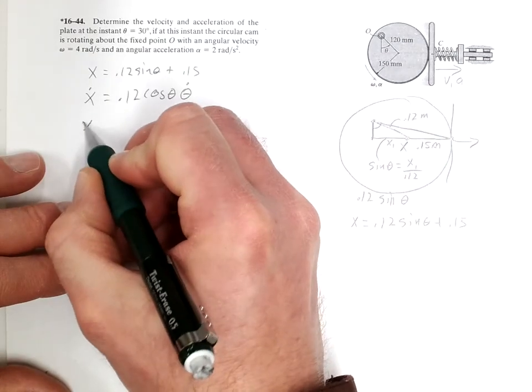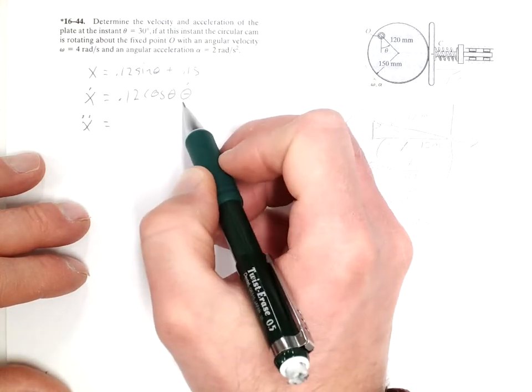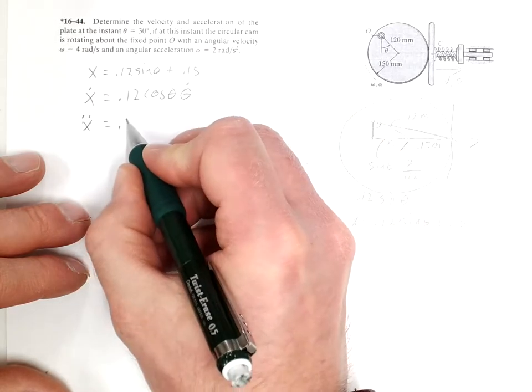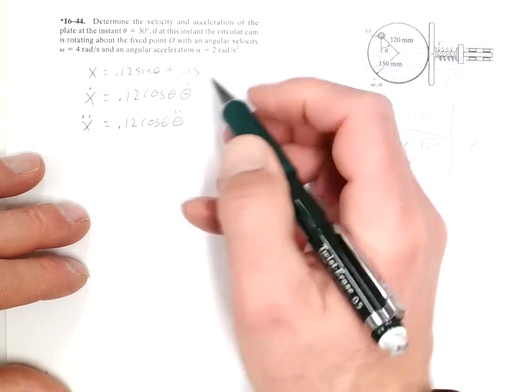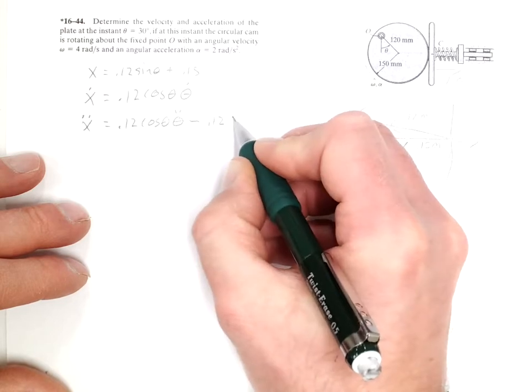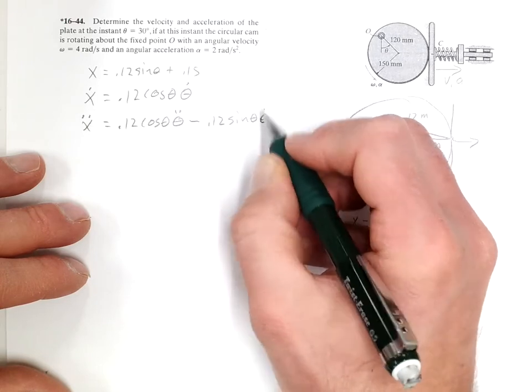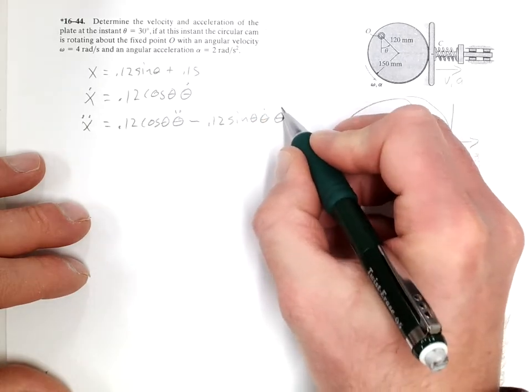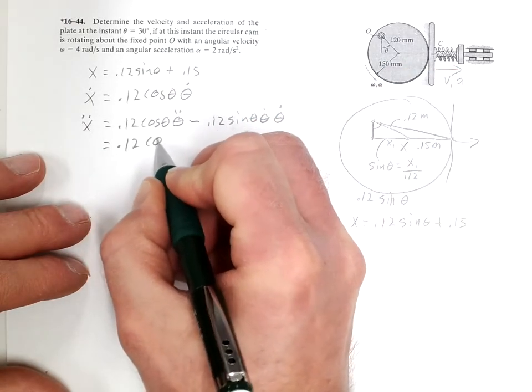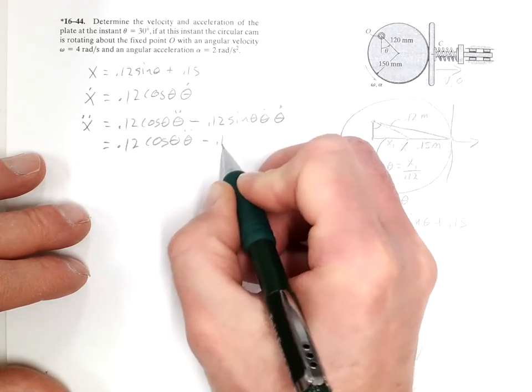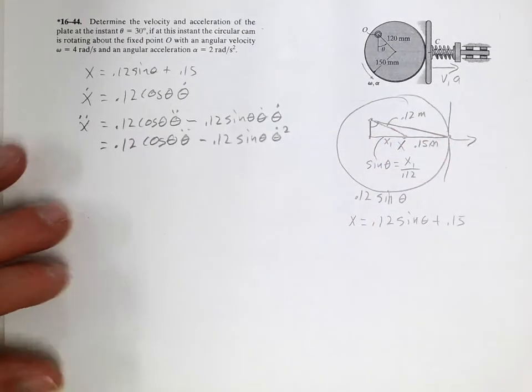And then the second derivative, X double dot, equals doing the product rule first times the derivative of the second, 0.12 cosine theta, theta double dot. And then the second times the derivative of the first, minus 0.12 sine theta, theta dot. There's the derivative of this part. And then we have a second theta dot, the second part. So combining those. And there we have the first and second derivative.